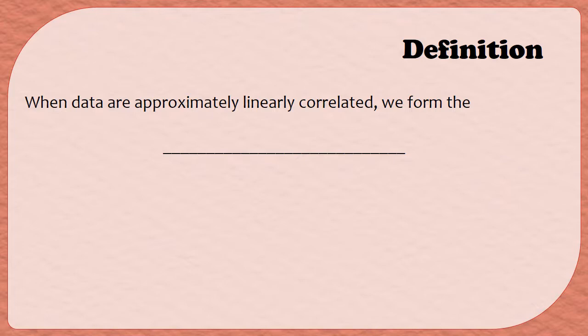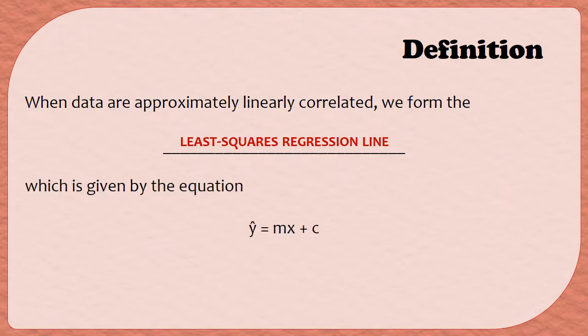When data are approximately linearly correlated, we can form the least squares regression line. So, what is this least squares regression line? Well, it's a line that's given in this form, ŷ = mx + c. Now, you might think this sounds a little similar to y = mx + b, and that's because it is. I'm basically just using a c instead of b, and I'm using a ŷ instead of just a y. This is the traditional form of this line, although sometimes different letters are used other than m and c.